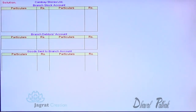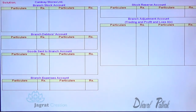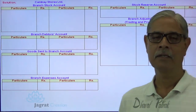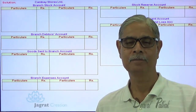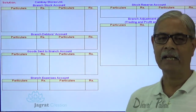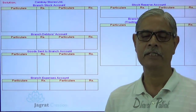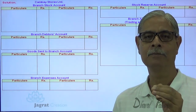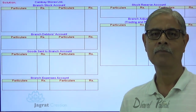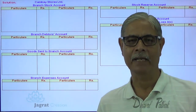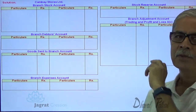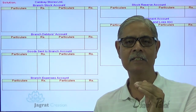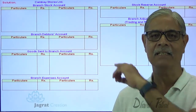Now let me explain the branch adjustment account. It is prepared in two parts: the upper part is known as the trading account portion, and the lower part is known as the profit and loss account portion. Some teachers give the labels 'Trading Account' and 'Profit and Loss Account,' but the correct label is 'Branch Adjustment Account.' The upper part is for the purpose of finding out the gross profit — it is a substitute of the trading account, but not exactly a trading account.